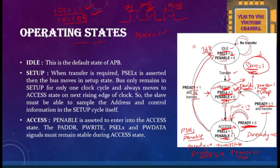That covers the operating states of APB protocol. In the next class, we are going to look at various timing diagrams — with wait states and without wait states. If the bus is in a waiting period it remains in the access state; if there is no waiting period it moves to the next setup phase and then idle state. We will check timing diagrams for both P_READ data and P_WRITE data. Hope this video was helpful — please give a like, share with your VLSI colleagues who want to learn APB protocol. Thank you all.